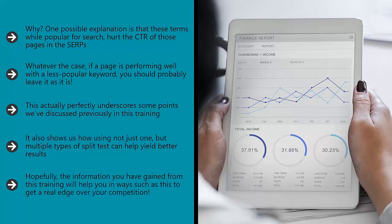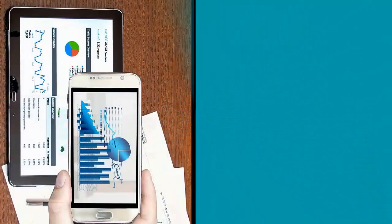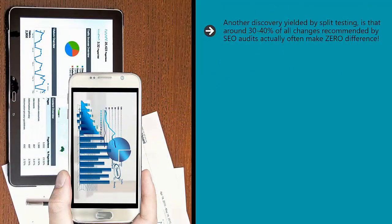It also shows us how using not just one but multiple types of split tests can help yield better results. The research conducted here was done using a typical matched pages method, but if they had also used a redirect, they might have been able to see if the bounce rates and CTRs were what was responsible or if something else was at play. Hopefully, the information you have gained from this training will help you in ways such as this to get a real edge over your competition. Another discovery yielded by split testing is that around 30–40% of all changes recommended by SEO audits actually often make zero difference — showing us that what works in theory doesn't necessarily hold up in the real world, and underscoring the value of conducting real split tests.